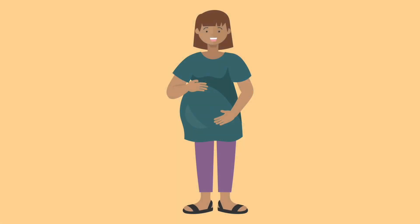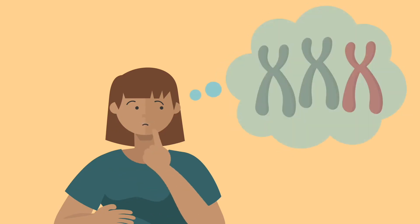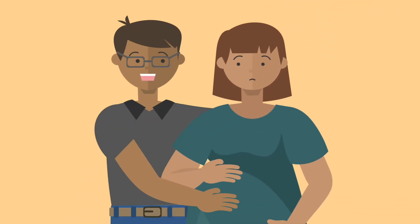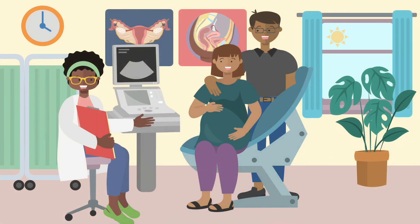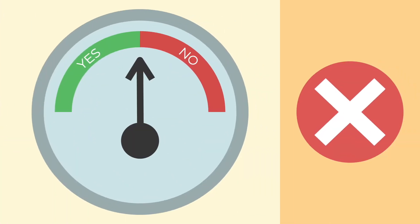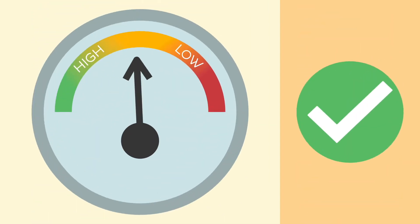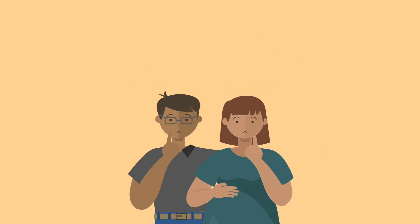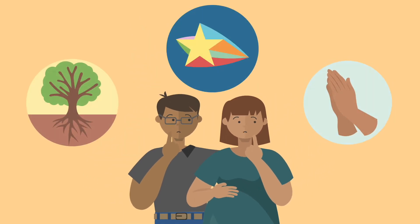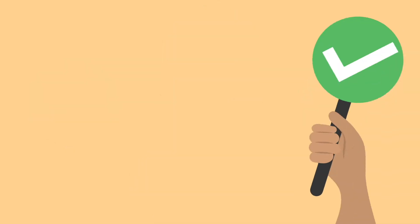If you're expecting a baby, you might ask yourself: is there a way to know if my baby has Down syndrome? If you want to find out the risk before birth, you might want to have a screening test done. Screening tests won't tell you for certain if your baby has Down syndrome; rather, they'll indicate a high or low risk. It is completely up to you whether to perform these tests. You can choose what you think is best for your family based on your wishes, values, and beliefs — there is no right or wrong answer.